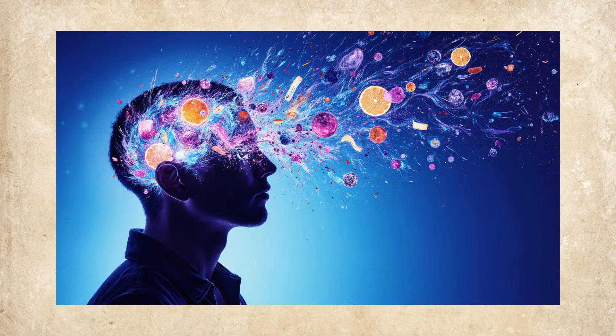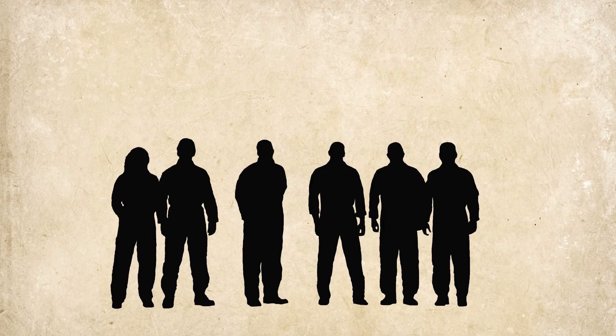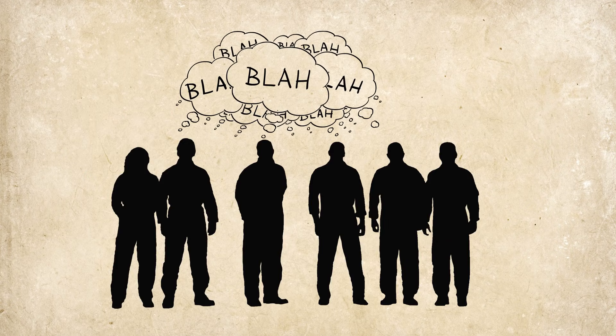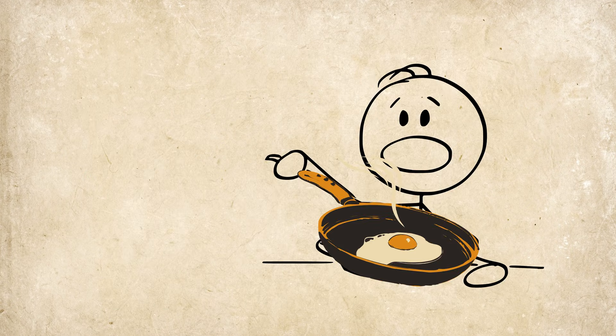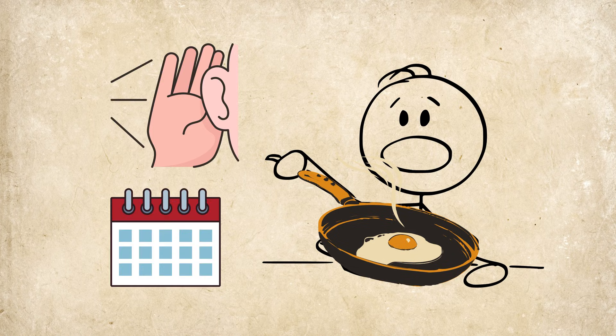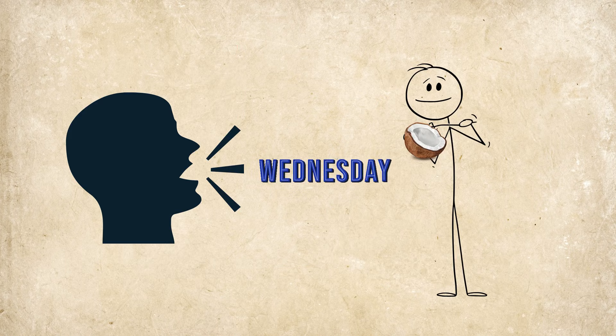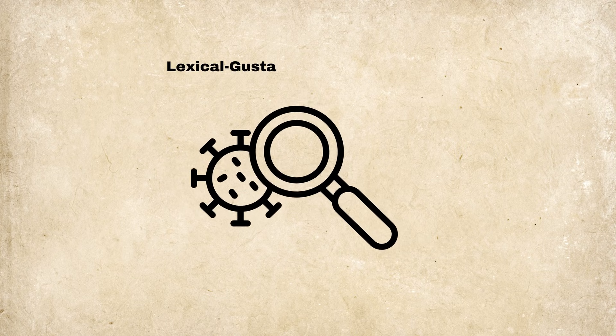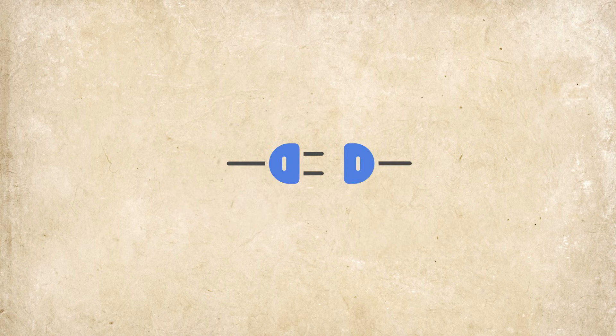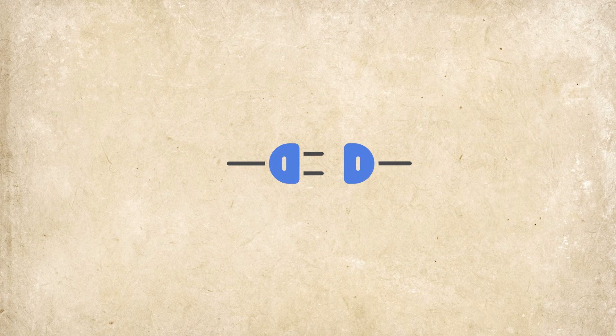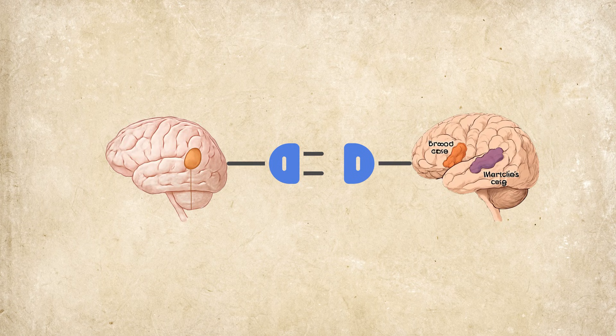Lexical gustatory synesthesia. Have words ever made you taste strange things? Some people experience words as flavors, like tasting scrambled eggs when hearing calendar, or coconut when someone says Wednesday. This rare condition is lexical gustatory synesthesia, a strange crosswire between language and taste centers in the brain.